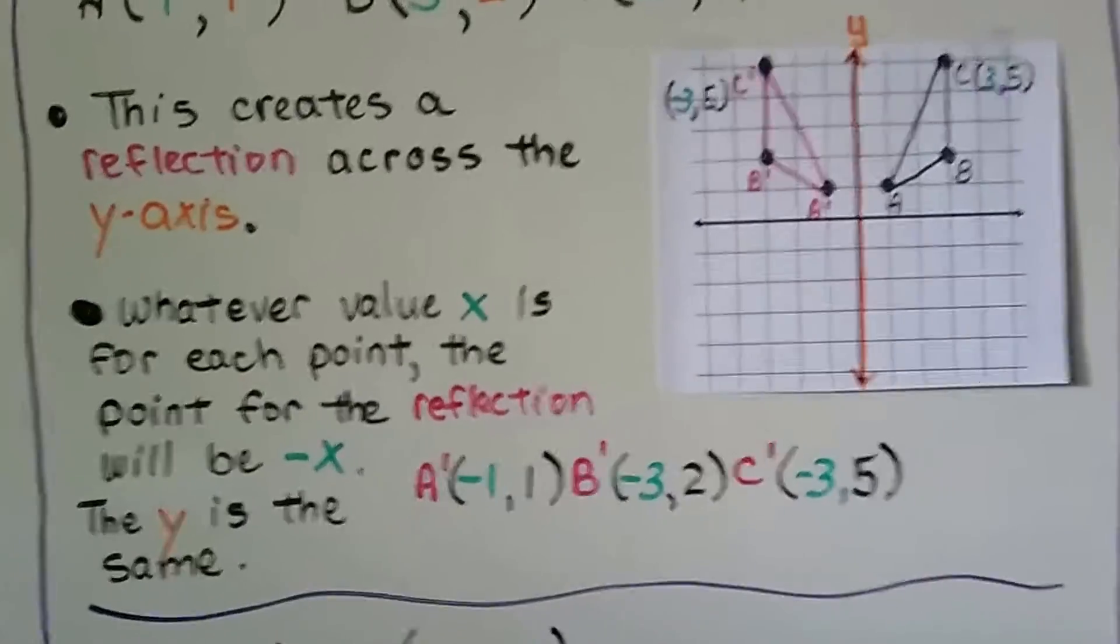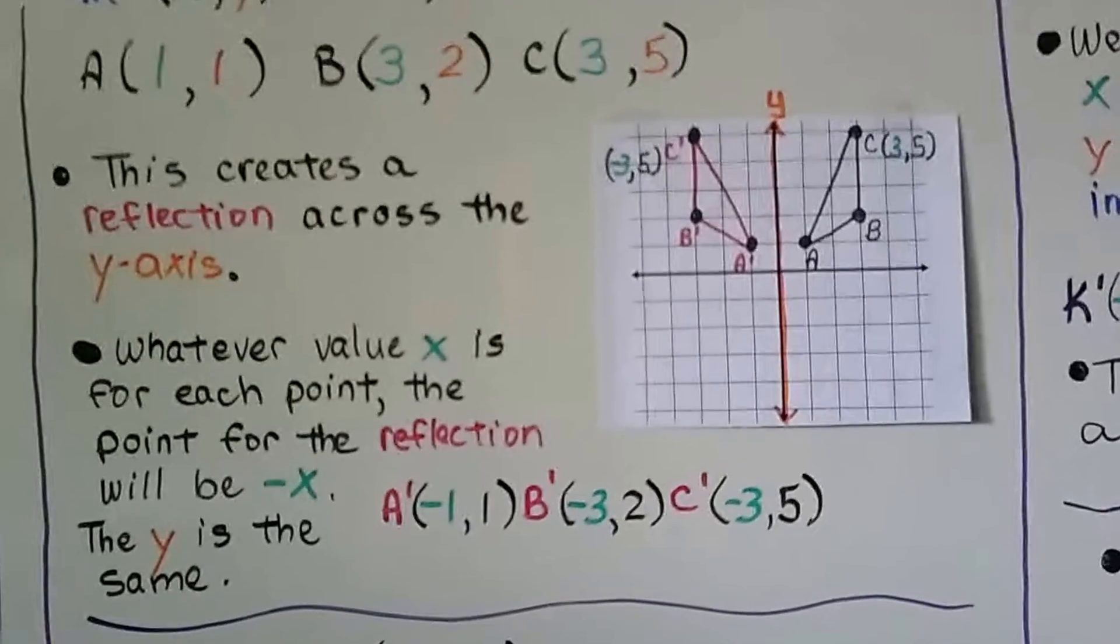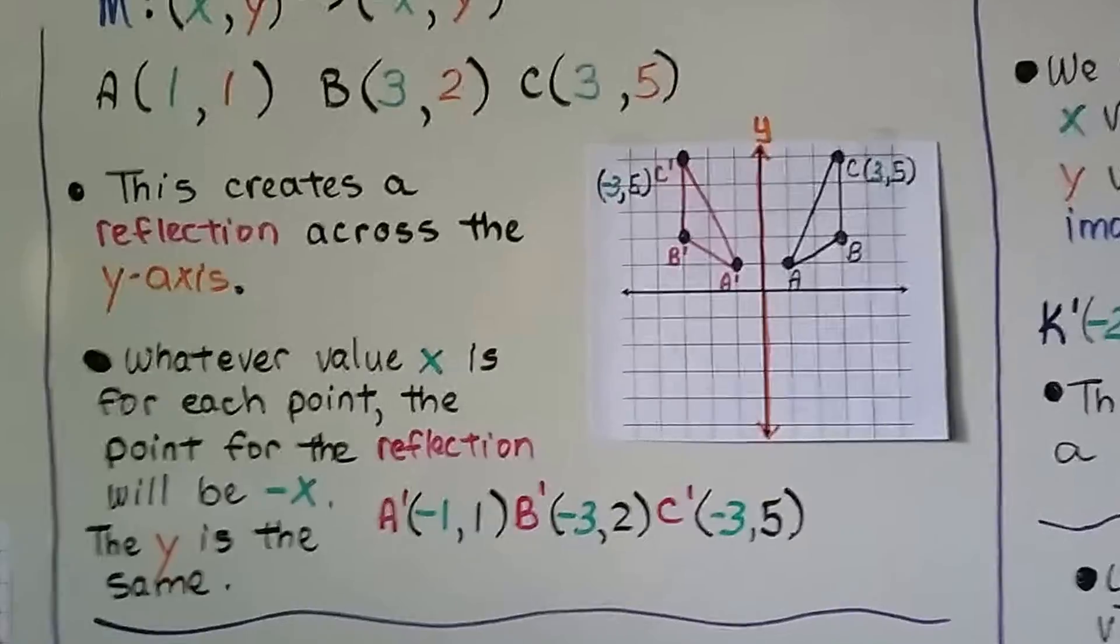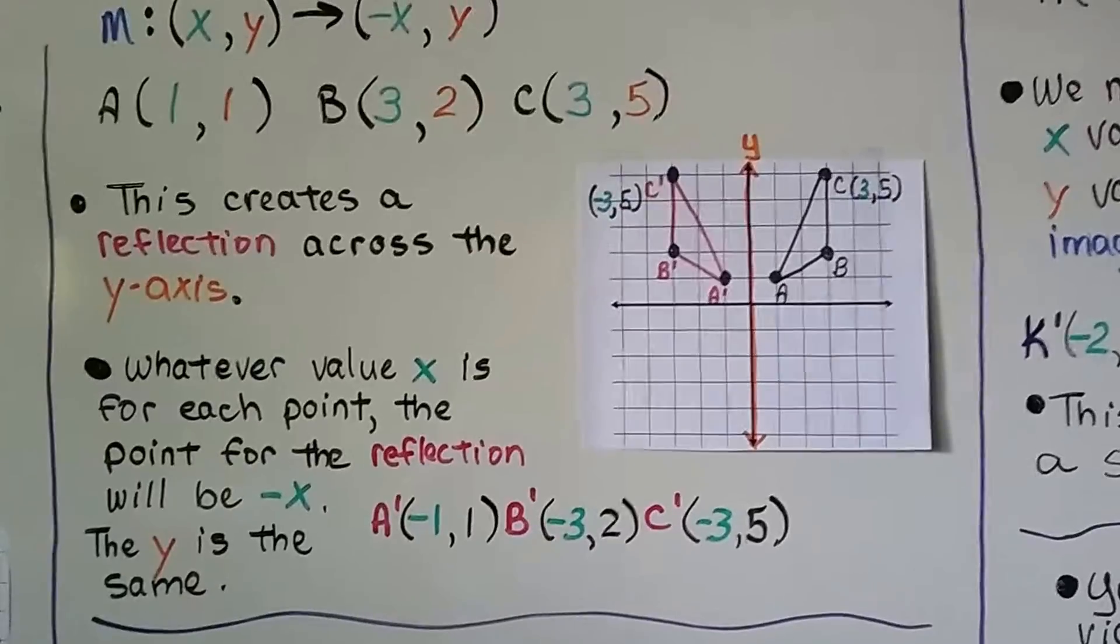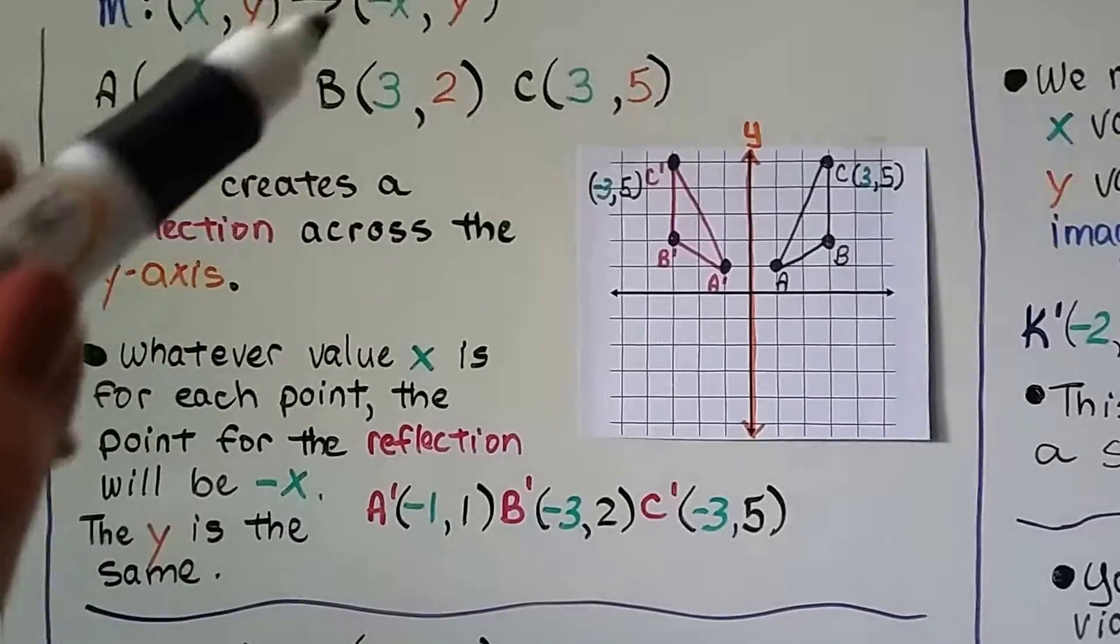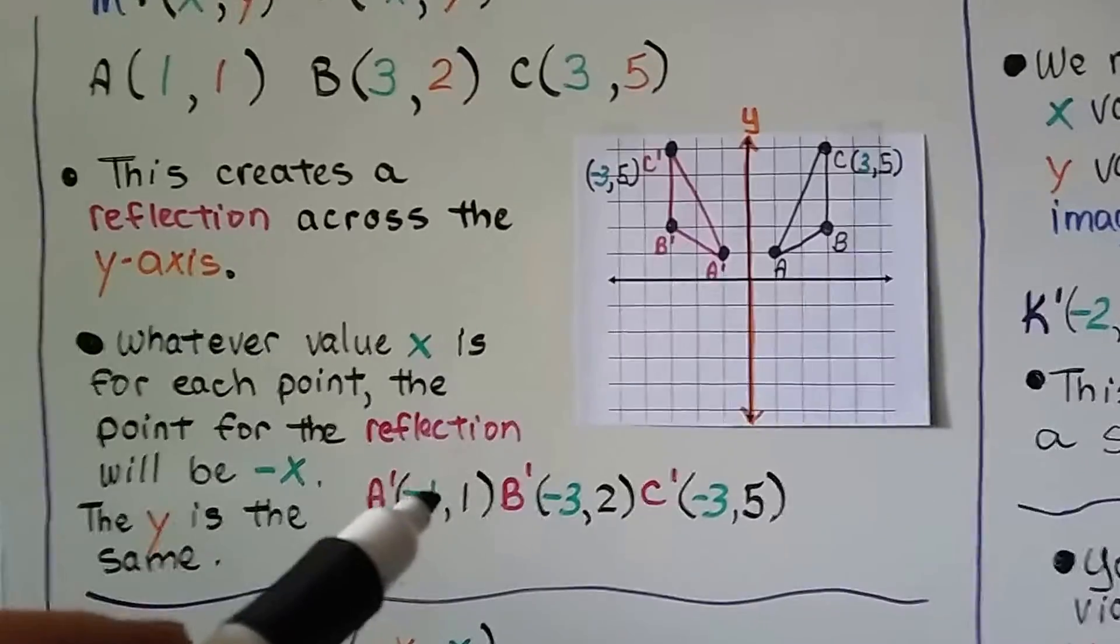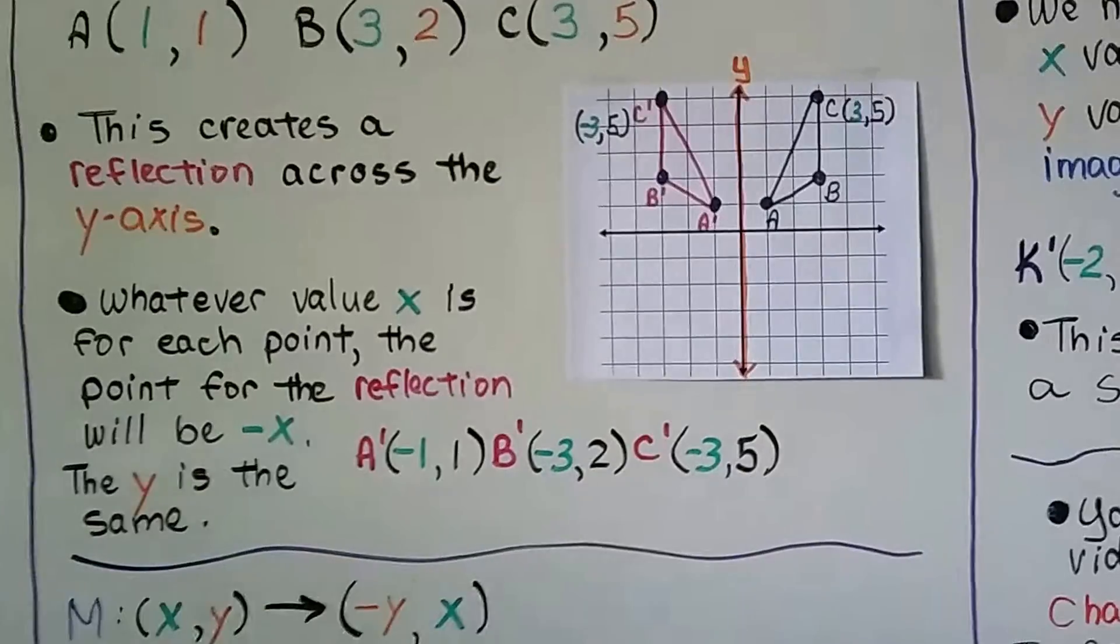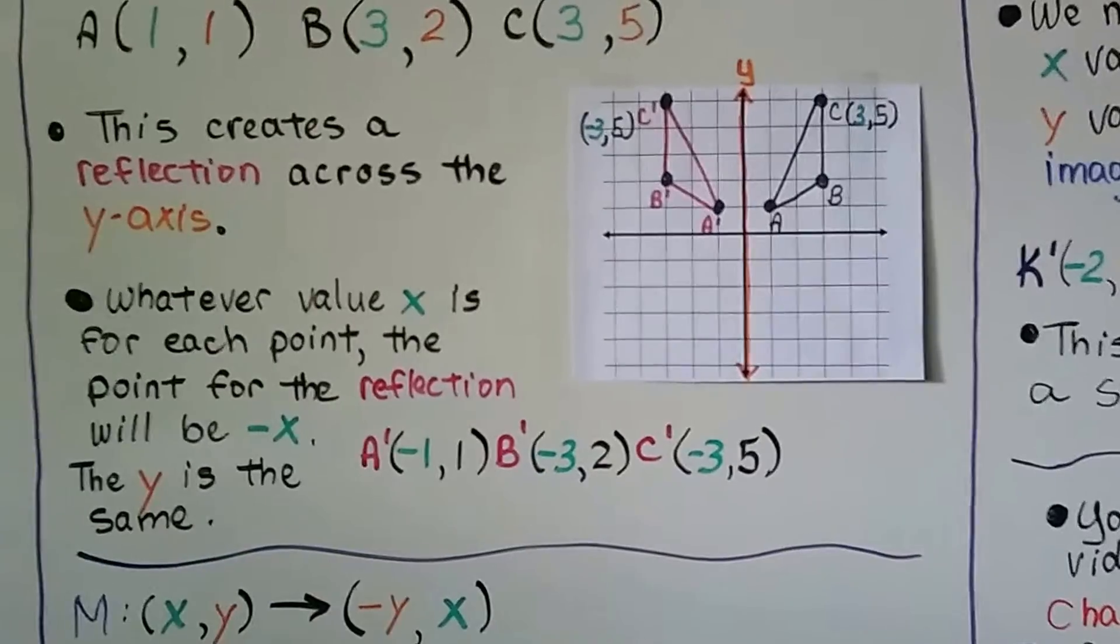Whatever value x is for each point, the point for the reflection will be -x, and the y is the same. So if you look at our preimage points up here, what we're going to do is just make the x a negative. 1 became a -1, 3 became a -3, this 3 became a -3, and the y value stayed the same.